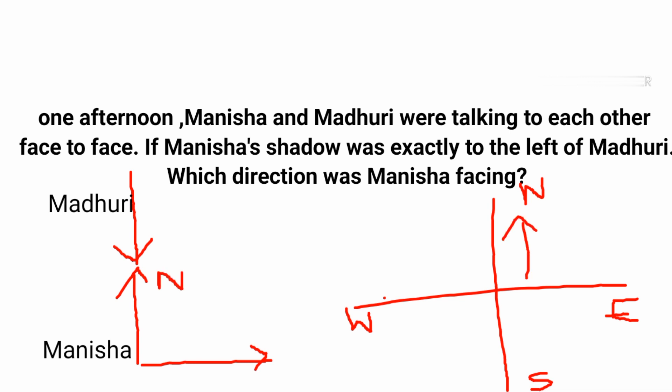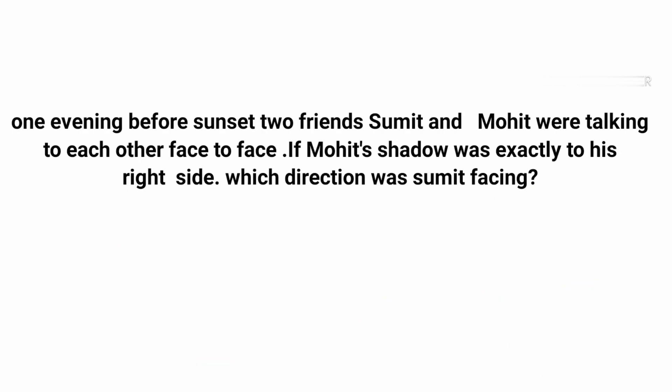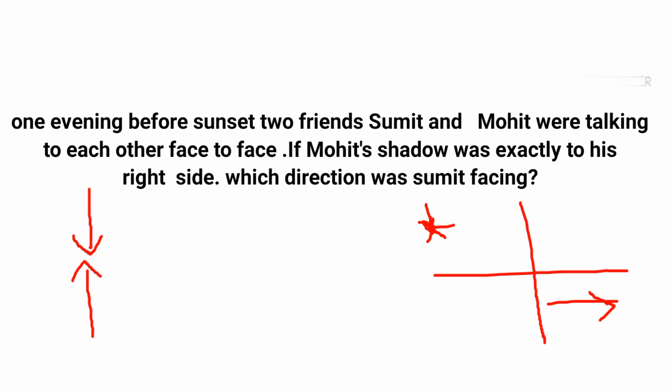Problem 3: One evening before sunset, two friends Sumit and Mohit were talking face to face. If Mohit's shadow was exactly to his right, which direction was Sumit facing? In the evening, the sun is in the west, so the shadow forms towards the east. If Mohit's shadow is to his right, Mohit is facing north. Since they are standing face to face, Sumit is facing south.